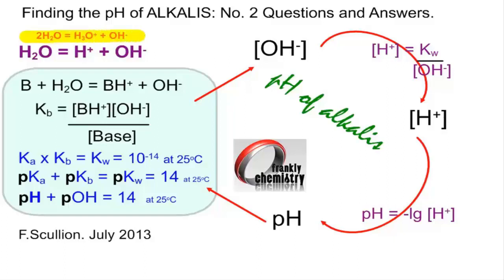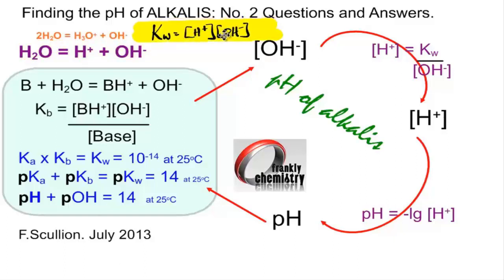Up on the top left, highlighted in yellow, is the equation for the self-ionization of water, forming hydroxonium ions and hydroxide ions. Below it, highlighted in yellow, is a simpler version where hydrogen ions are used instead of hydroxonium ions. There's the so-called ionic product of water, Kw, which is the product of the concentrations of hydrogen ions and hydroxide ions in water. It is a modified equilibrium constant, so it's for a specific temperature.